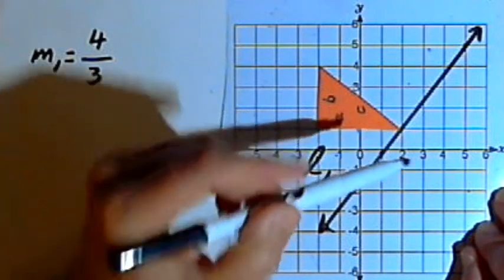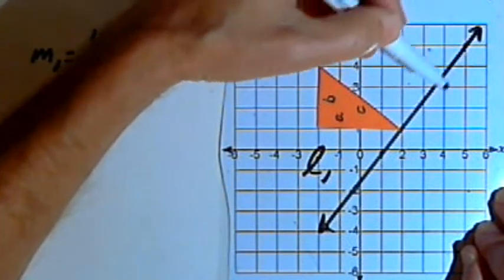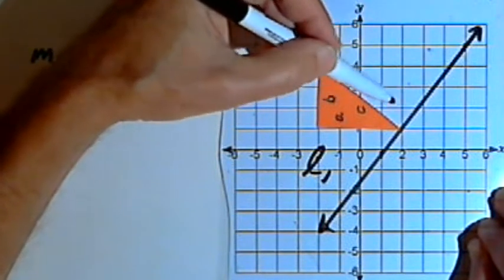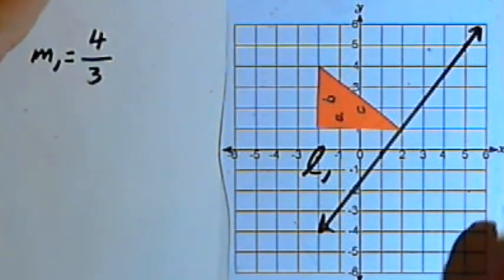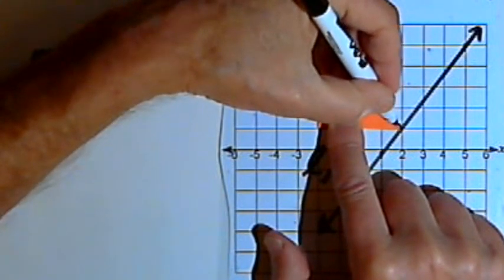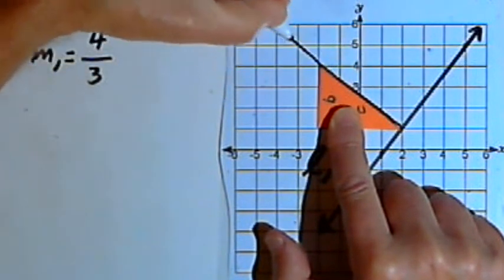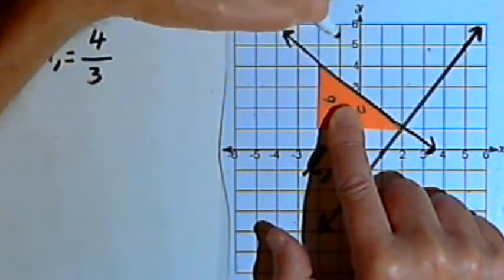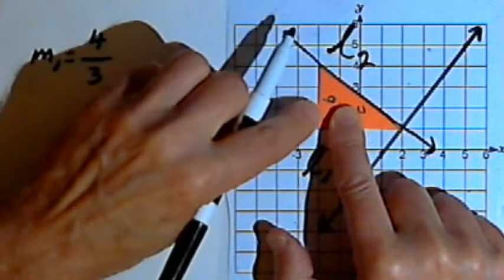Side C, which had been running right along line L sub 1, is 90 degrees away from that. It's perpendicular to it. So I can use side C and draw a line that will be perpendicular to line L sub 1. We can call that line L sub 2.